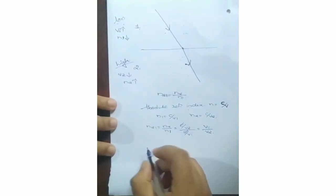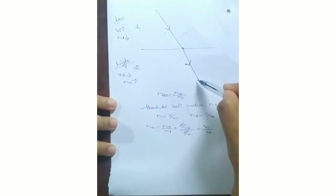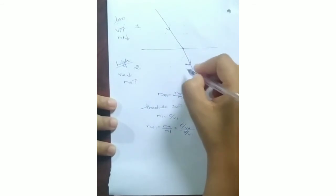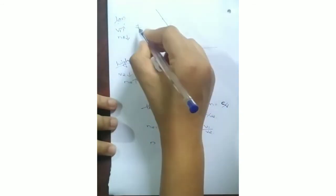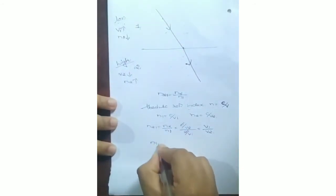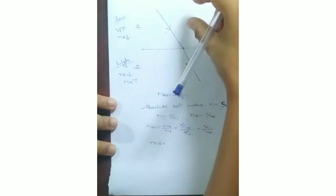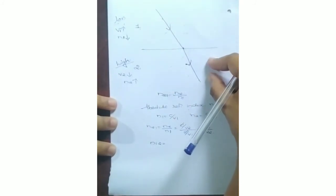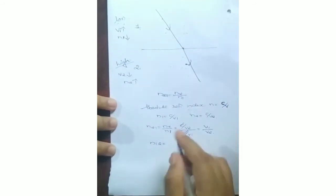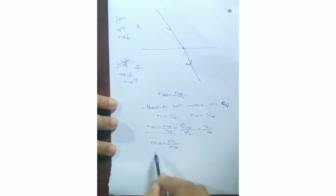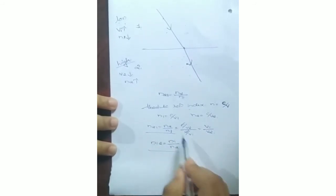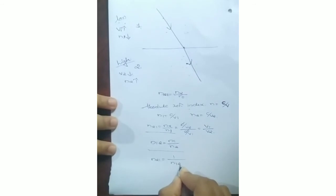Now suppose in the reverse case light passes from the second medium to the first medium — the direction of the arrow is just opposite. In that case this becomes the second medium and this becomes the first medium, so we write N12. The refractive index of the second medium with respect to the first is N12 = N1/N2. Comparing the two: N21 = N2/N1 and N12 = N1/N2, so one is just the reciprocal of the other — N21 = 1/N12.